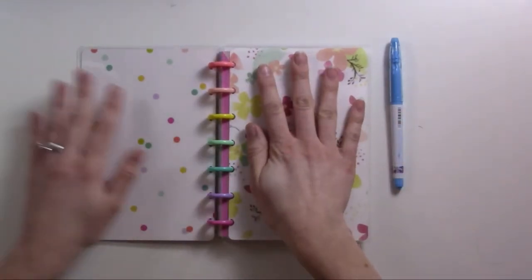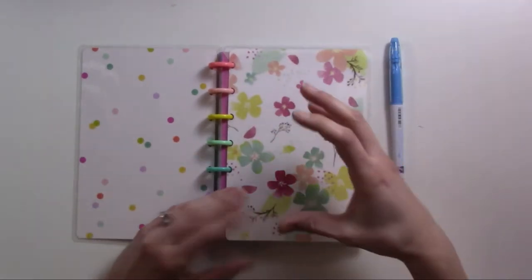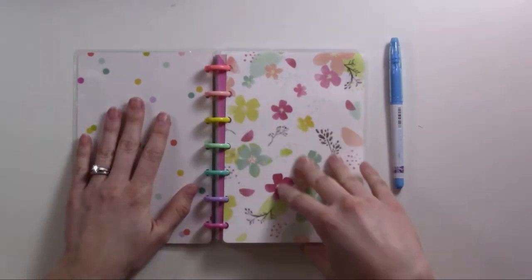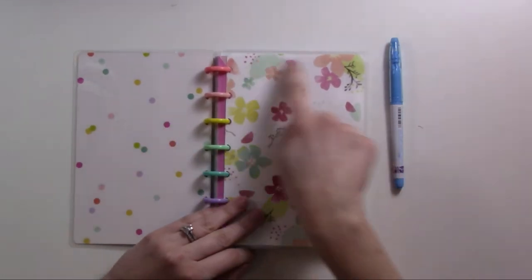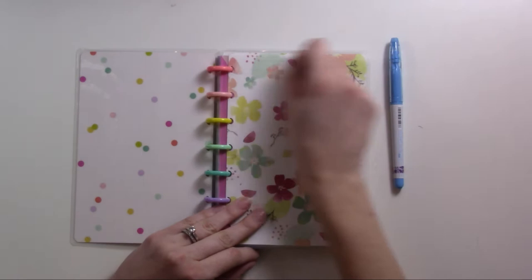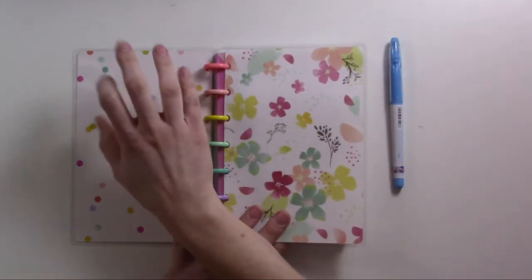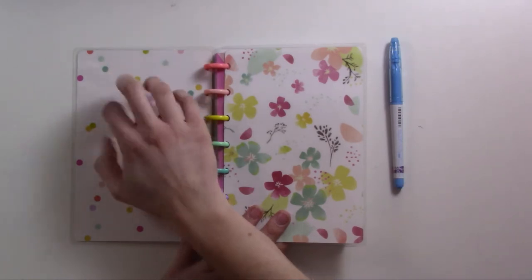I'm gonna put doing on this side and done on this side, or maybe the other way around. Doing, done, and then this is the to-do. So those are the three sections: to-do, doing, and done. I have it on two places so that I'm not looking at what's upcoming.